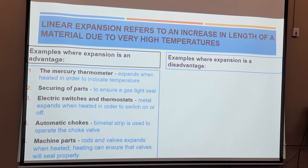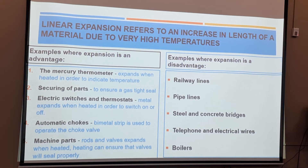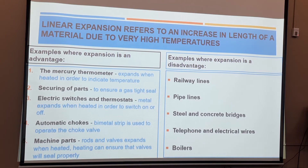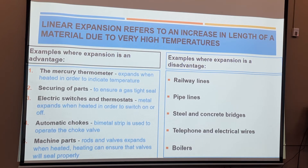Examples where expansion is a disadvantage: during the design of railway lines, short pieces are cut and joined together, with bolts allowing for expansion. They cut small pieces to leave clearance between them — unlike one long rail from Cape Town to Johannesburg, which would deform and buckle on hot days. The same principle applies to pipelines: short pieces are cut, one side welded and the other side bolted so the bolted side allows for expansion.